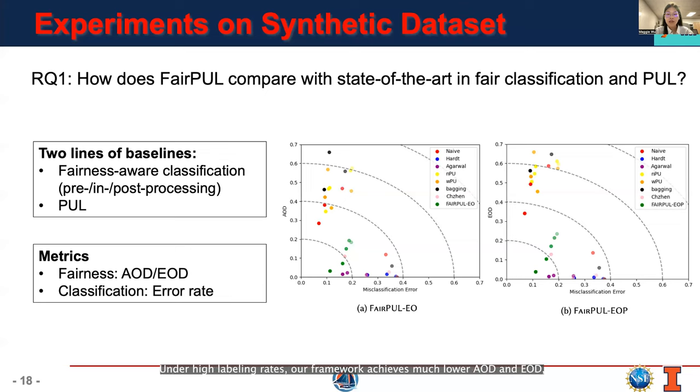Under high labeling rates, our framework achieves much lower Δ_EO and Δ_EOP, that is, higher level of fairness, while maintaining a good level of accuracy. Under low labeling rates, our framework achieves much better performance in both classification accuracy and fairness.